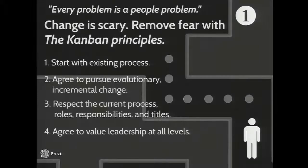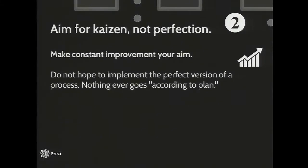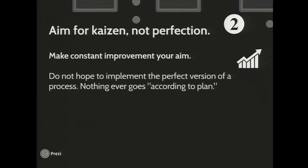Not every problem is just a process problem — every problem is a people problem. Change is scary. We can introduce change and remove fear by using the Kanban principles. The first principle is start with the existing process — don't try to make a huge change overnight. Number two, agree with your team to pursue gradual, evolutionary change. Number three, respect the current roles, titles, and positions — don't try to get somebody fired. Number four, agree to value leadership wherever you find it within the team. Next, aim for Kaizen, not perfection — a lot of us want to implement the perfect version of an improvement, but let that idea go and remember to make constant daily improvement your aim.